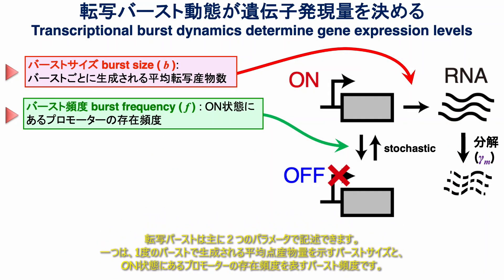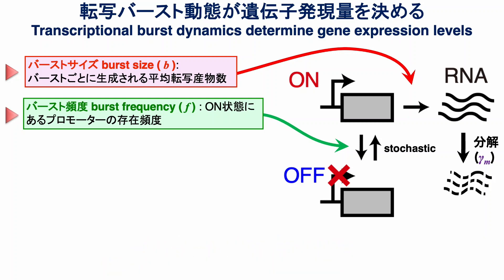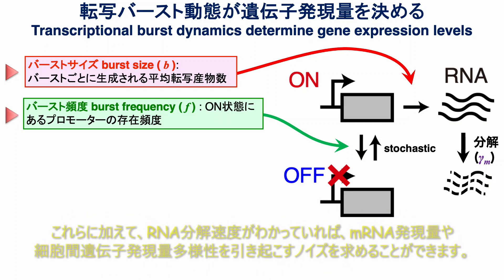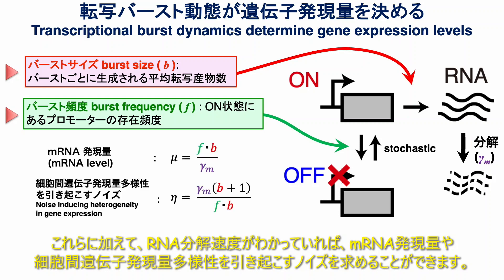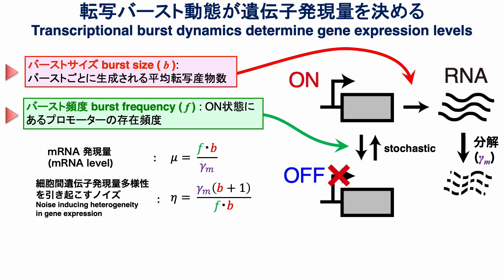Transcriptional bursting can be described primarily by two parameters. One is the burst size, which indicates the average product amount produced in a single burst, and the burst frequency, which represents the presence frequency of promoters in the on-state. In addition, if the RNA degradation rate is known, we can determine the noise that causes variations in mRNA expression levels and diversity of gene expression between cells.